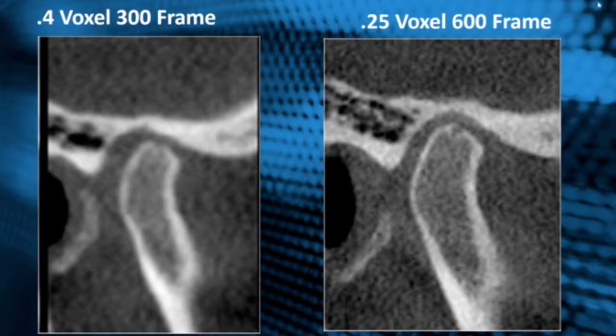So we did a 300 frame count for a 0.4 voxel scan on this scan here of the dentist, and then I went ahead and took a 0.25 voxel 600 frame scan using this one over here. We wanted to compare the difference. There's two things that have changed: one is the voxel size, and the other is the frame count.